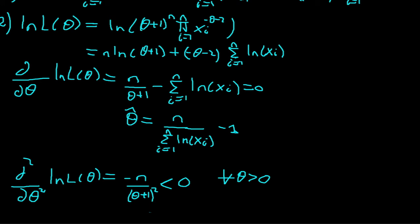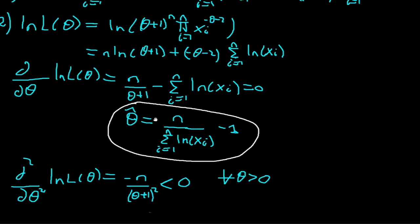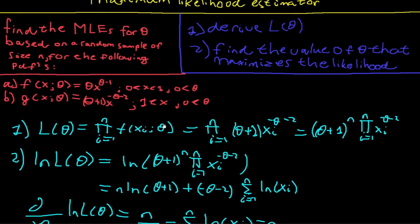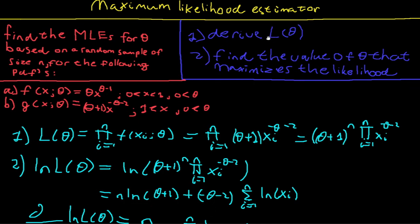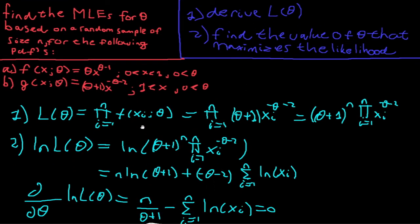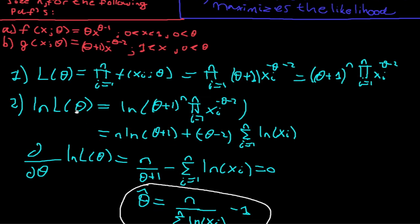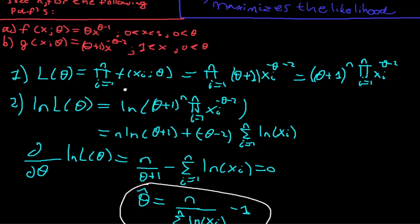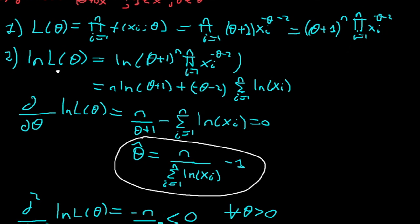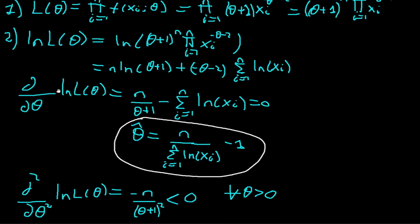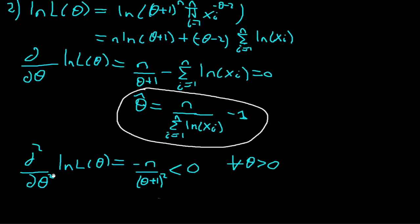This is our maximum likelihood estimator for the second example. Let's do a quick recap of the steps. First, derive the likelihood function — this is always standard. Then take the natural log, but only if the function is differentiable; if it's not, a separate video will cover that case. Check that the second-order condition holds, and then find the value of theta that maximizes the likelihood by setting the first derivative equal to zero.